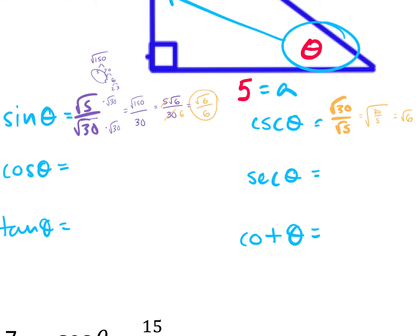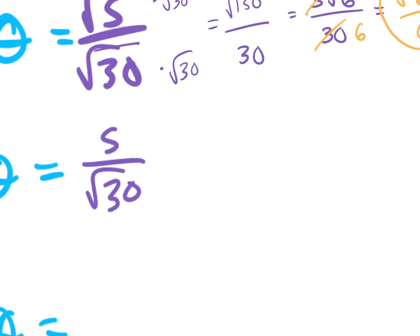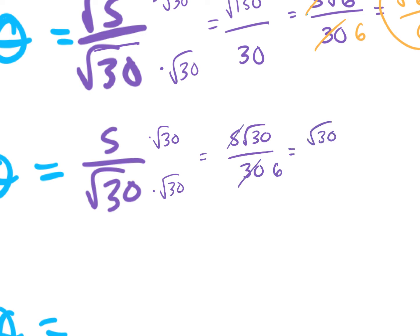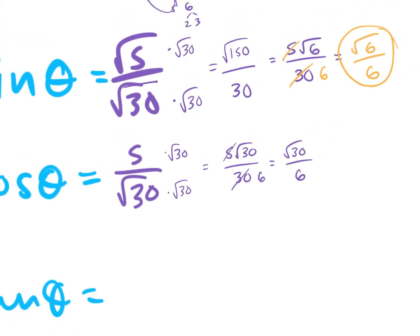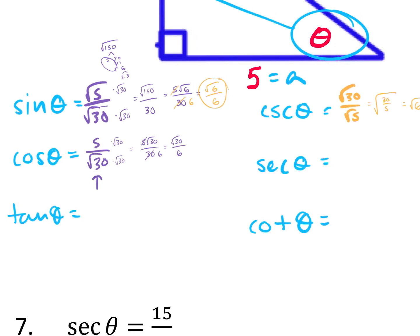Cosine is adjacent over hypotenuse, so that would be 5 over √30. I have to rationalize, so multiply the top and bottom by √30. That gives 5√30 over 30, which simplifies to √30 over 6. Secant is the reciprocal, so I just flip the original — that would be √30 over 5.